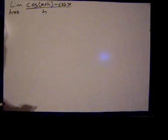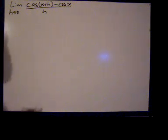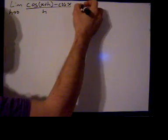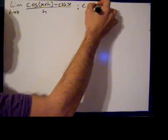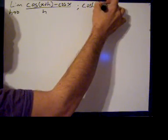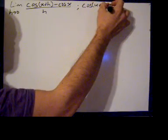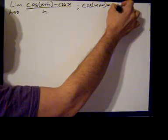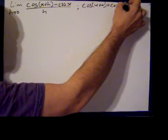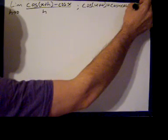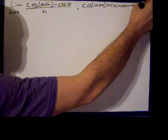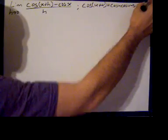We're going to use a trigonometric identity, the identity for the cosine of the sum of two angles, and that is the cosine of an angle u plus an angle v equals the cosine of u times the cosine of v minus the sine of u times the sine of v.